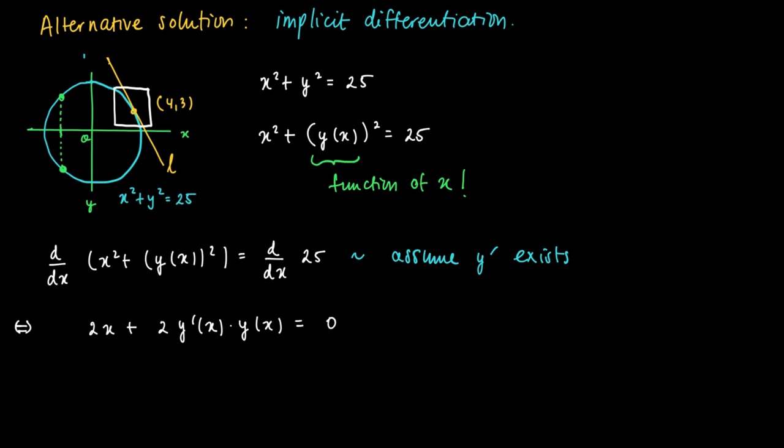So 2y prime of x times y of x equals the derivative of 25, which is a constant. So this term vanishes and we get a 0 on the right-hand side.